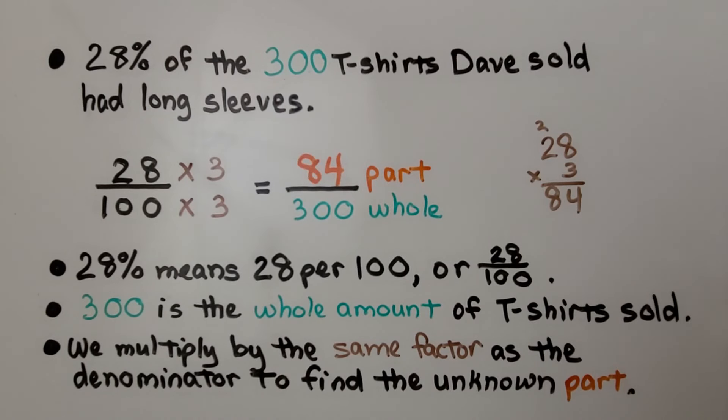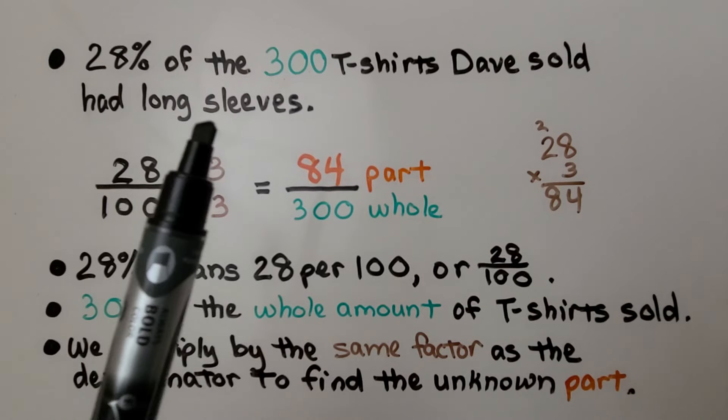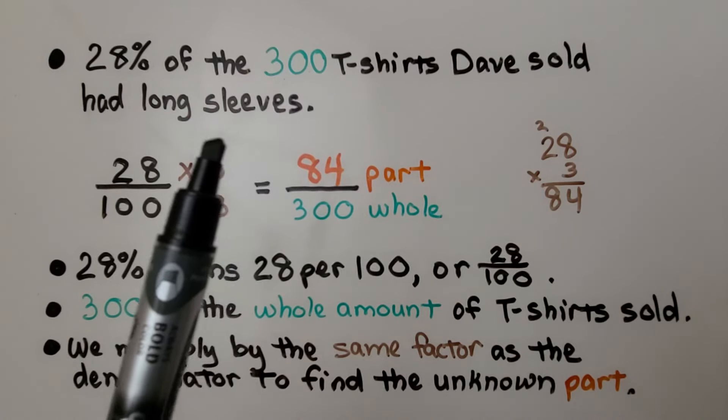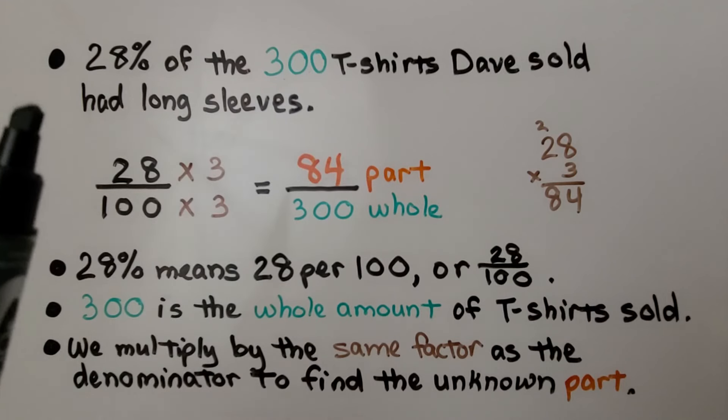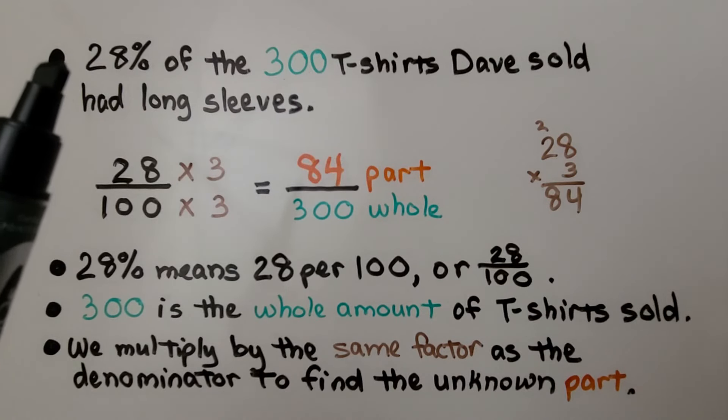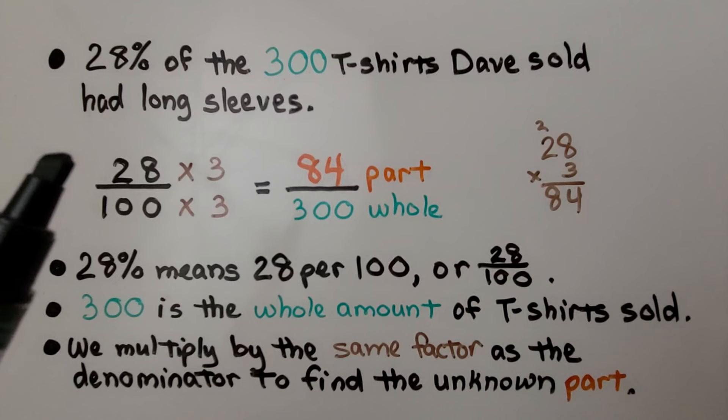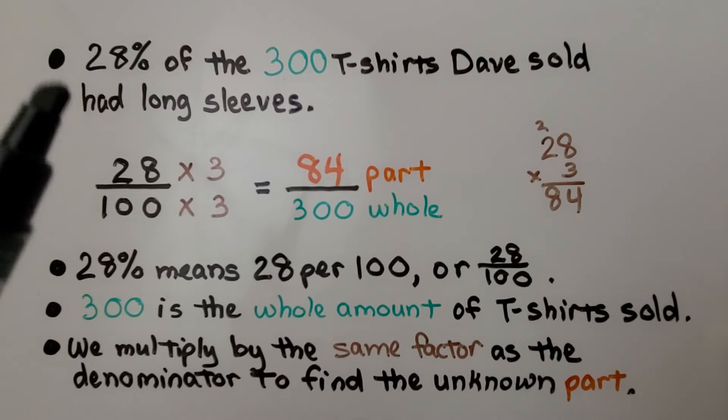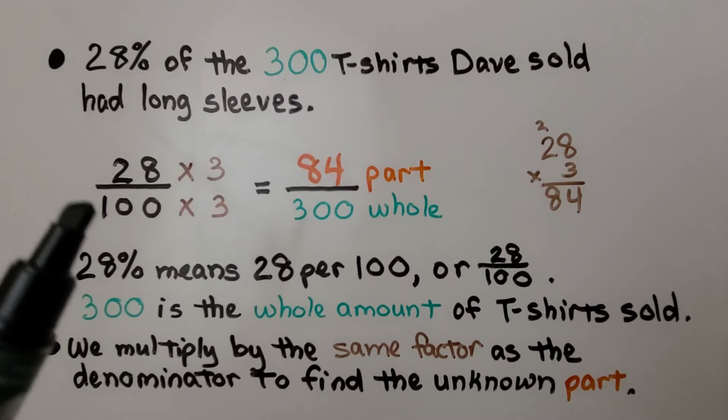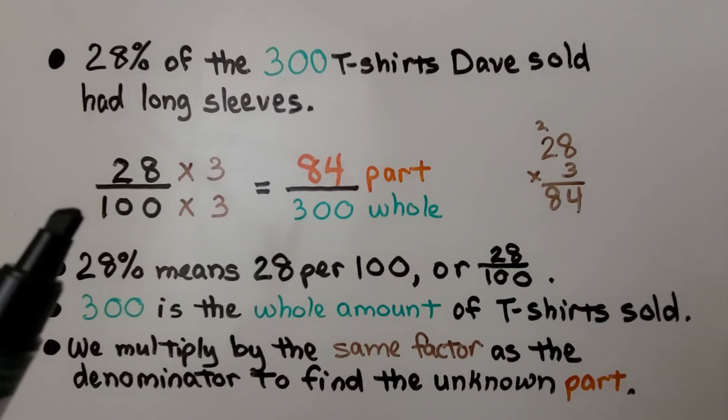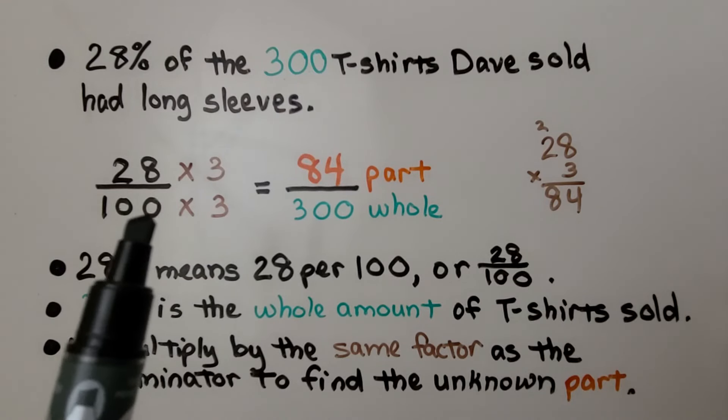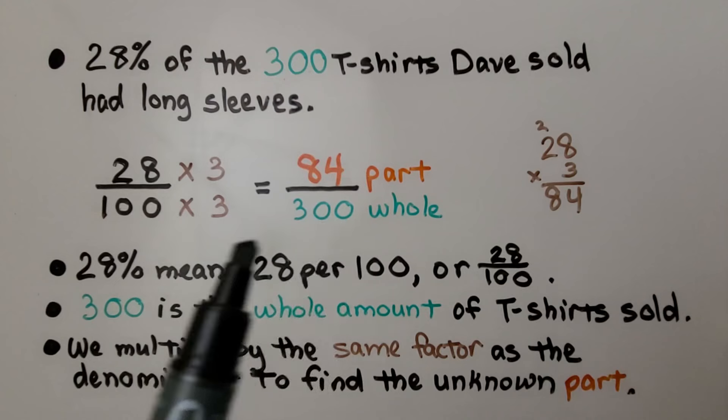In the first part of this Lesson 8.3a, we had the problem 28% of 300 t-shirts Dave sold had long sleeves. We wanted to find how many were long sleeves, and we write the percentage as a fraction, a ratio, with 100 as its denominator. We ask ourselves 100 times something is 300, so we know it's a 3.